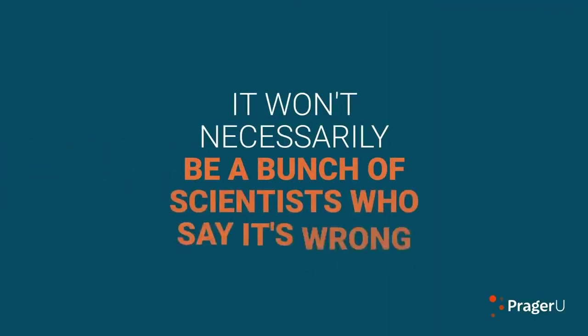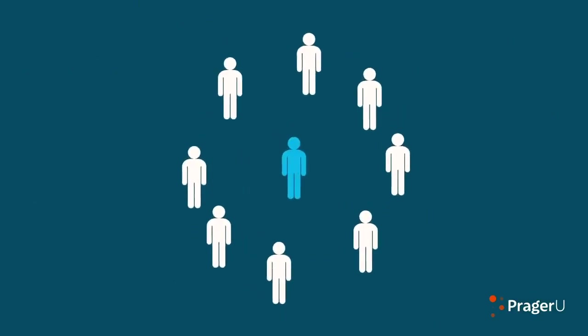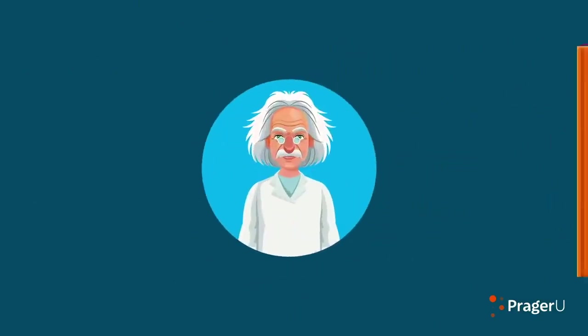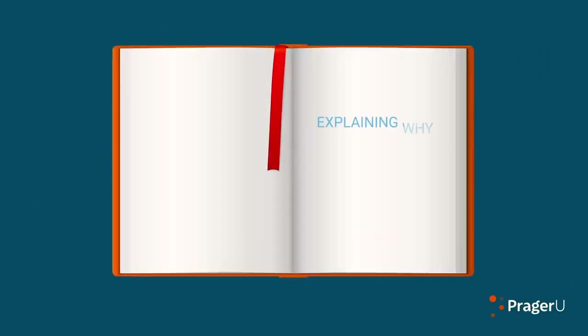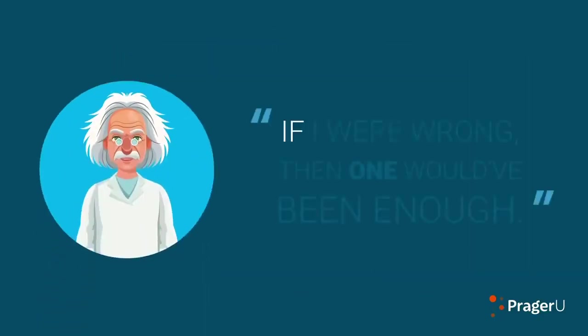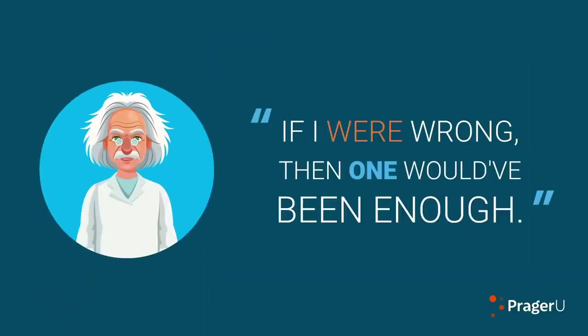And if it's wrong, it won't necessarily be a bunch of scientists who say it's wrong. It might be one guy. Ask Einstein. One hundred scientists wrote a book explaining why his theory of relativity was wrong. He quipped, 'If I were wrong, then one would have been enough.'